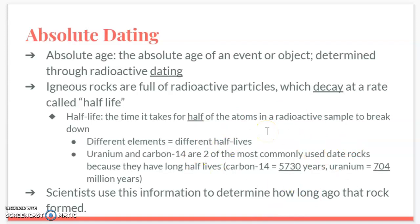Uranium has a half-life of 704 million years. If only 25% of carbon-14 atoms are left, that means it went through one half-life to 50%, then a second half-life to 25%, so that rock sample is 5,730 times two — about 11,460 years old. Scientists use half-life and radioactive dating to determine the exact age of a rock sample and the fossils within it.